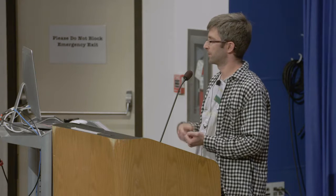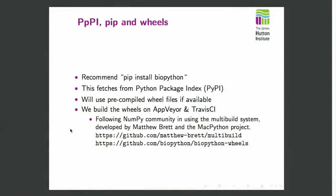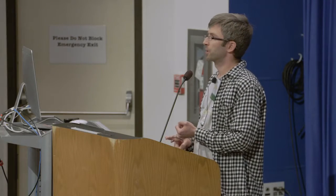Python packages are distributed on something called the Python Packaging Index — it's like CRAN or CPAN in the Perl and R world. That's the recommended way of getting BioPython. Nowadays we provide precompiled wheel format files, so you don't need a compiler on your machine; you can just download and install it in under a minute. There's some behind-the-scenes engineering work to make that happen. If you want to do this, look at the multi-build system the NumPy community uses, by Matthew Brett and others — it uses AppVeyor to build on Windows and Travis to build on Mac and Linux. When it works, it's a beautiful thing.